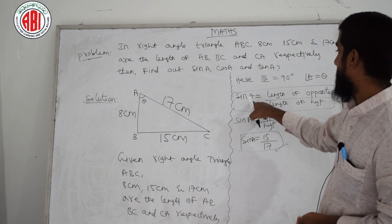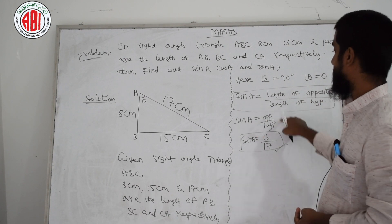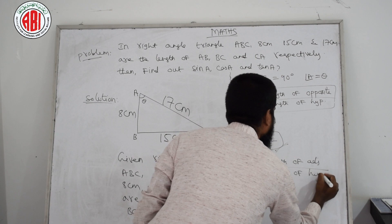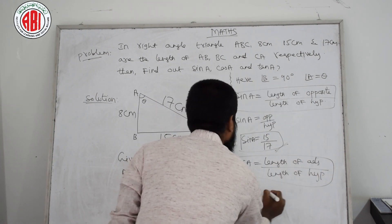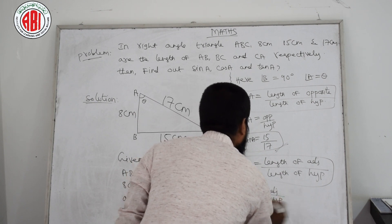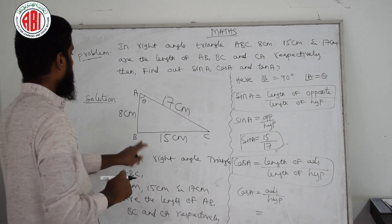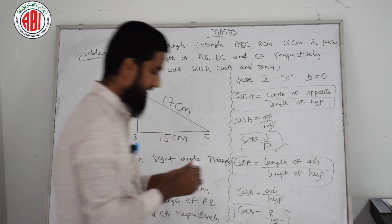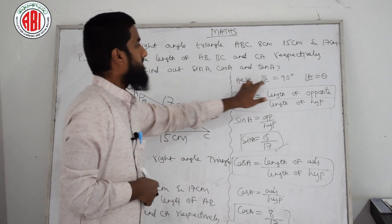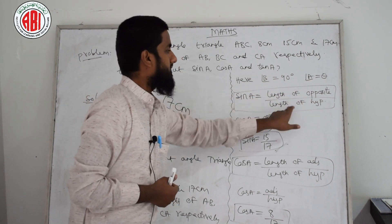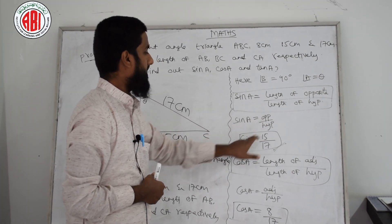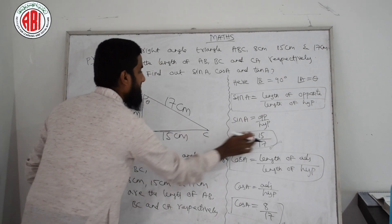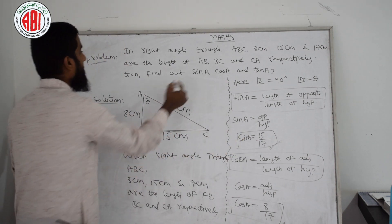Once again: sin A equals length of opposite by length of hypotenuse, which gives us 15 by 17. Now cos A equals adjacent by hypotenuse. What is the adjacent side? Adjacent side is 8, and hypotenuse is 17, so cos A equals 8 by 17. I have explained this solution: sin A equals 15 by 17 because opposite is 15 cm and hypotenuse is 17.